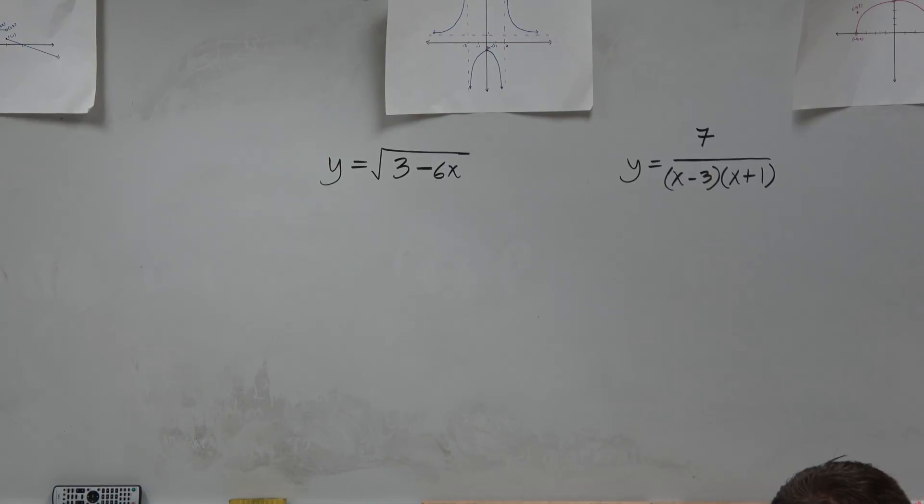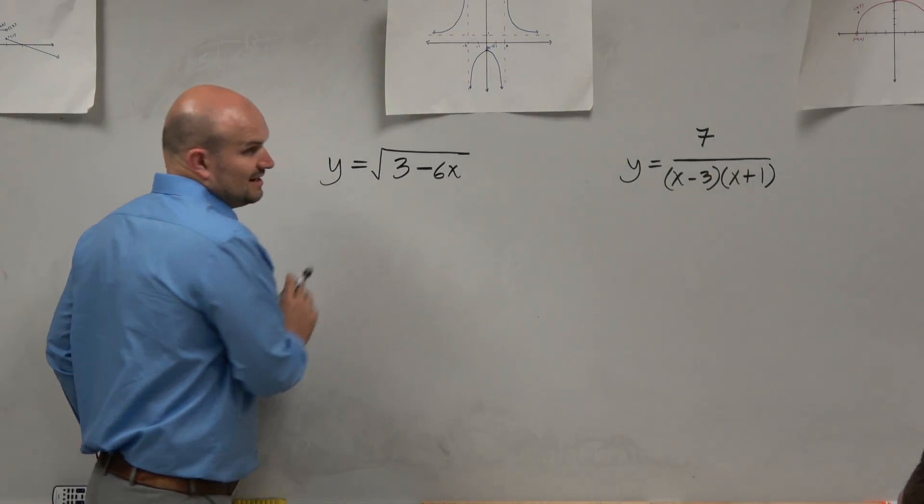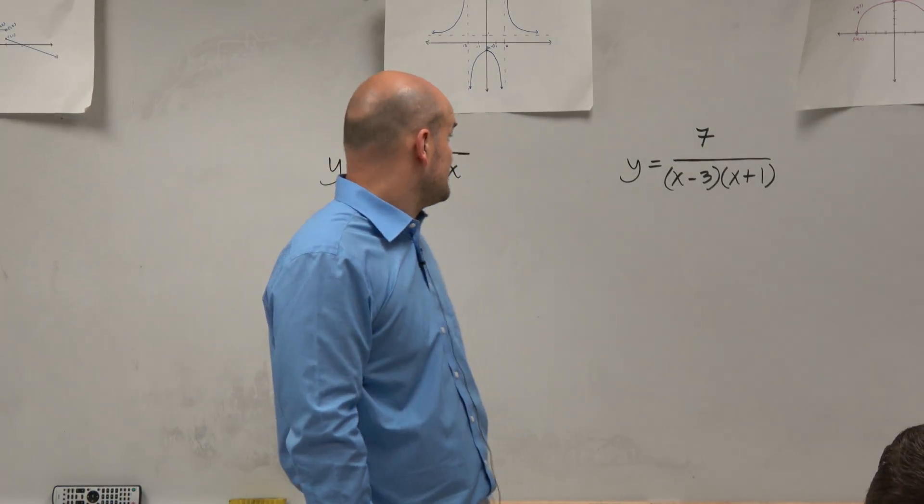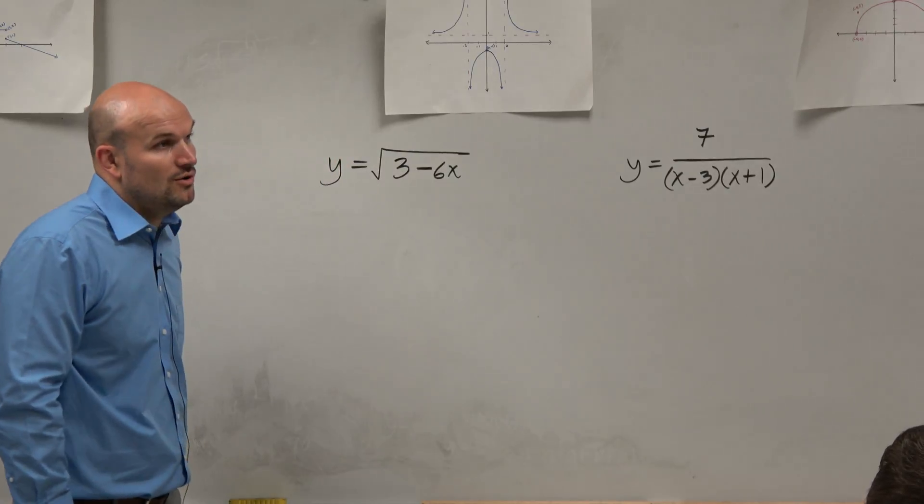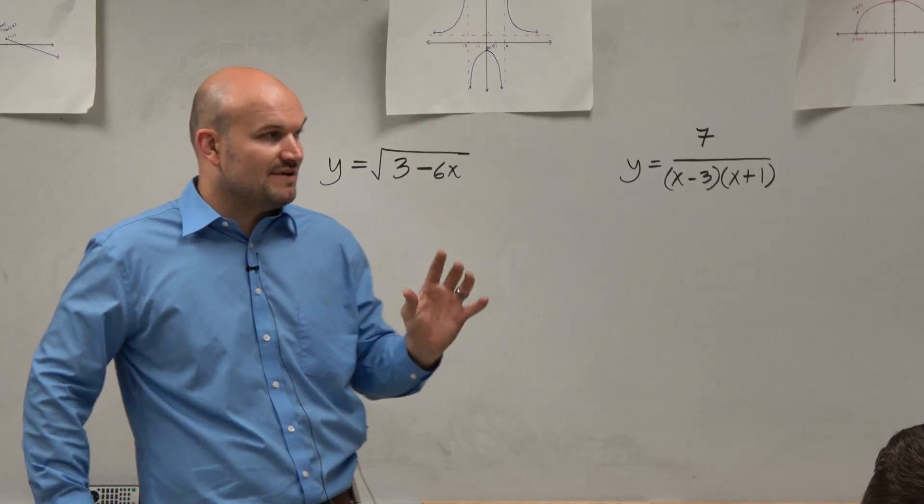So in this example, guys, we see a nice little beautiful radical, right? So if we want to be able to identify the domain here, basically what we want to look at is saying, all right, I know I can only take the square root of positive numbers, so I know my domain is being restricted for positive values.